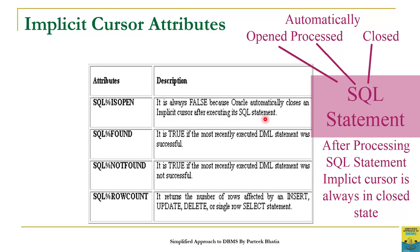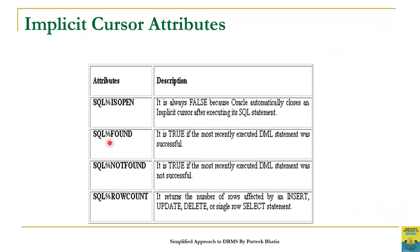The next attribute is SQL%Found. It will return true if the most recently executed DML statement — like insert, update, delete, or select — was successful, otherwise it returns false. SQL%NotFound is just opposite to SQL%Found, so it returns true if the most recently executed DML statement was not successful. SQL%RowCount returns the number of rows affected by the last executed insert, update, delete, or single row select statement.